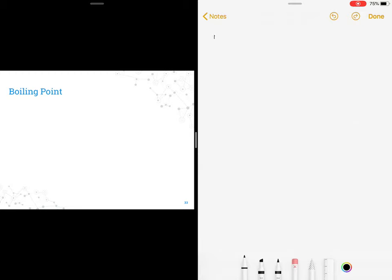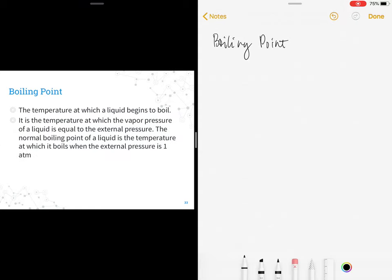Now we move to boiling point. This is also part of your properties of liquids. Boiling point is the temperature at which a liquid begins to boil. It is the temperature at which the vapor pressure of a liquid is equal to the external pressure. The normal boiling point of a liquid is the temperature at which it boils when the external pressure is 1 atmosphere.